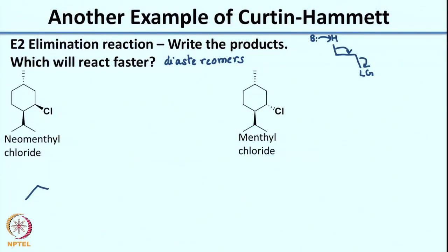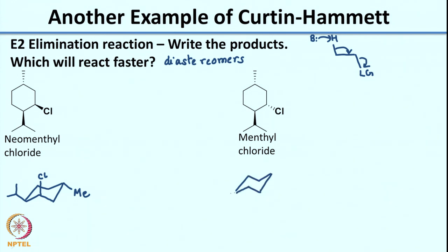Let us write the chair for the first molecule. You have the isopropyl group going up, and at the 2-position you have a Cl, and then at the 4-position you have a Me which is going down. Let us draw it for this molecule as well. The isopropyl and the Me remain the same — your isopropyl is going up, Me is coming down. The only difference here is that your Cl is also coming down. Now what we need to see is which of these would undergo the elimination reaction. The first thing to identify is what is the leaving group in both of these cases — the leaving group is the Cl.